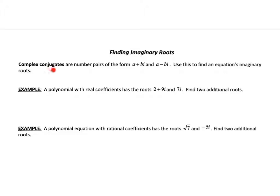So complex conjugates are number pairs, a plus bi and a minus bi. The same holds for imaginary roots too. If you have a plus bi be a root, then a minus bi is a root. So they come in conjugates. So the two additional roots right here are going to be 2 minus 9i and negative 7i. And down here it's going to be negative root 7 and positive 5i.